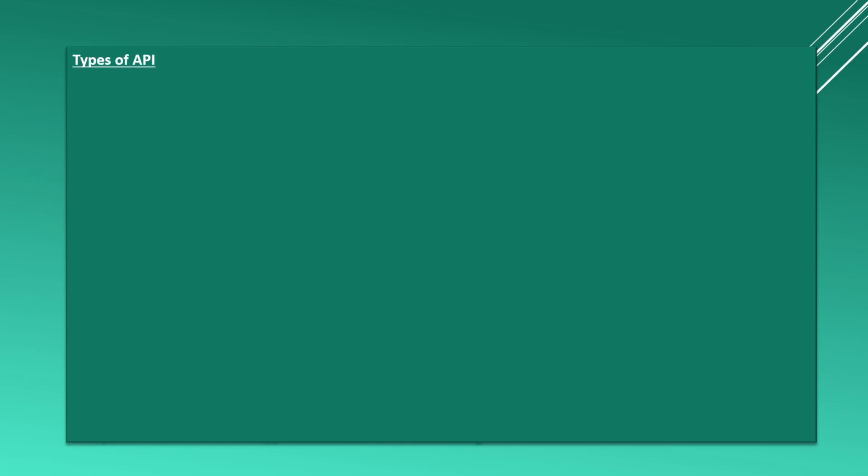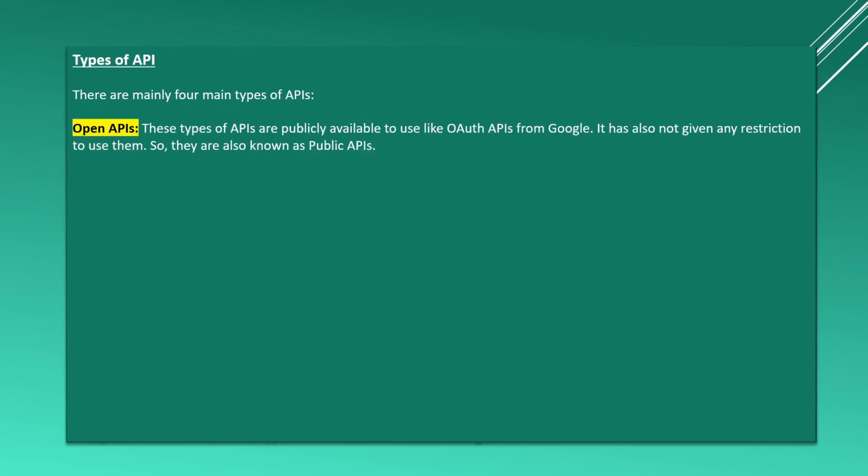Let's now look at the types of API. There are four main types of API: open API, partner API, internal API, and composite API. Open APIs are publicly available to use.